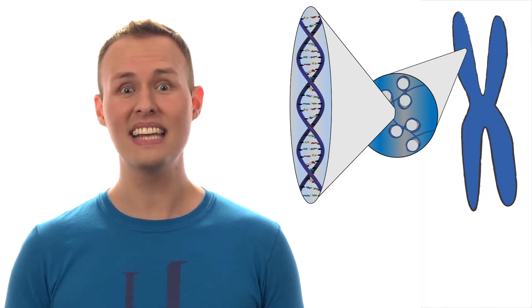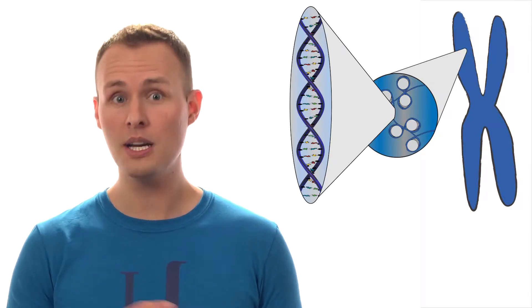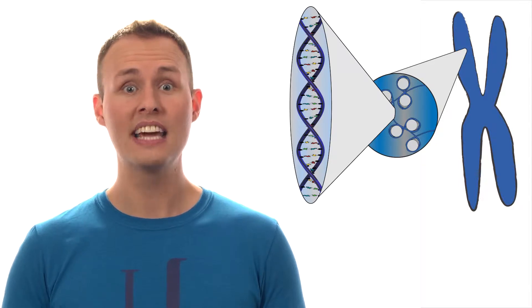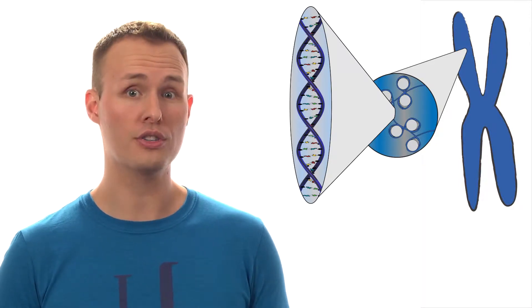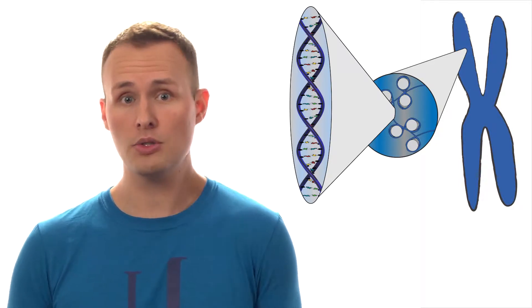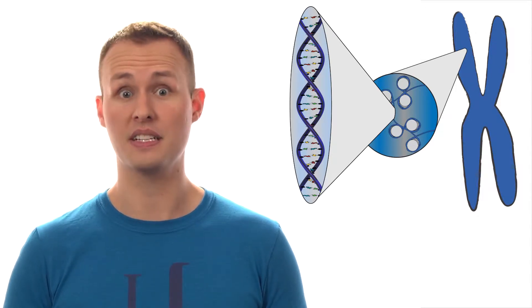But inside a cell, DNA is almost always wrapped up around histone proteins and organized into a higher order structure called a chromosome. And chromosomes are pretty much what we've been dealing with for the last couple of exercises.